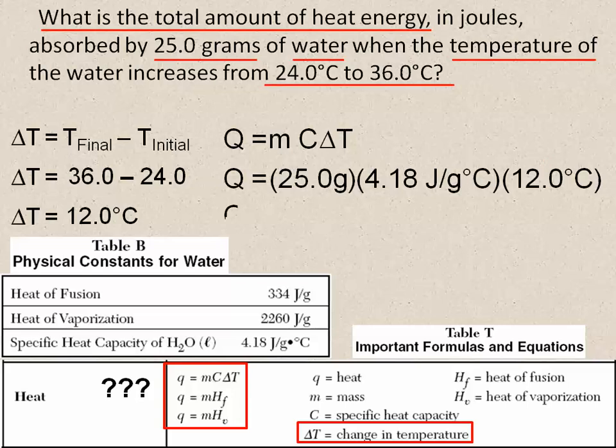And so when you multiply these three numbers together, you should get 1254 joules because the grams and Celsius units will cancel each other out, leaving you with a joule.